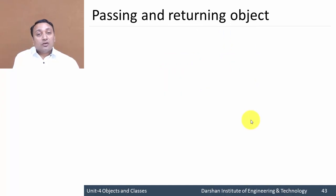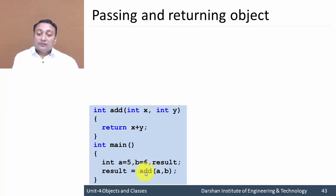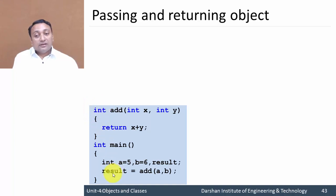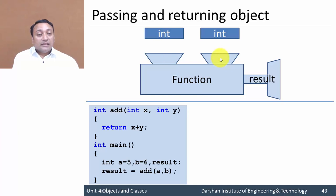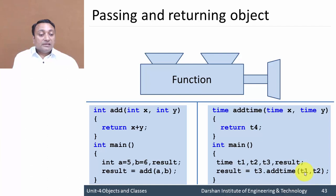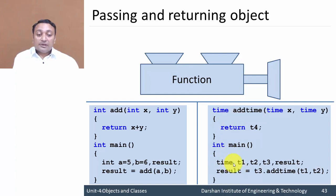Same way we can return an object as well. Here we have function add, passing variables a and b both of type integer. After processing, it returns some integer value which we store in variable result. Same way we can pass t1 and t2 as objects, and after processing it returns t4, which is of type time. So we receive that result in a variable of class type time. Let us illustrate this with an example.